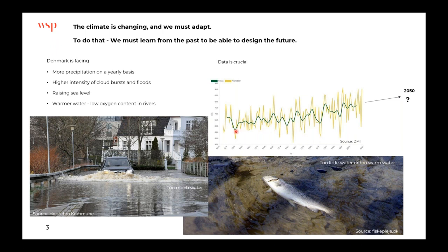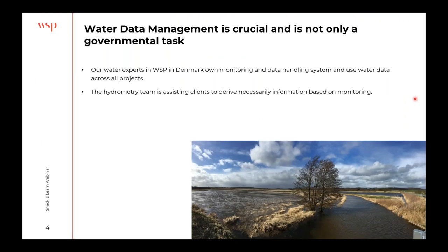If we look at the development of precipitation, you can see here on this curve that within the last 150 years we have had 15% more precipitation annually. We can look at that because we have the data bank and time. If we should look into the future — 50 years, a hundred years, whatever — we have to learn from the past, otherwise we cannot design the future. Therefore water management and water data management is crucial.